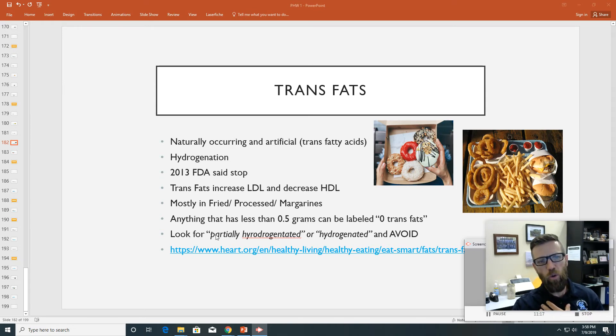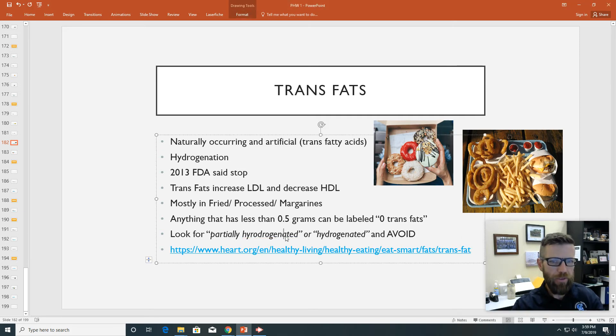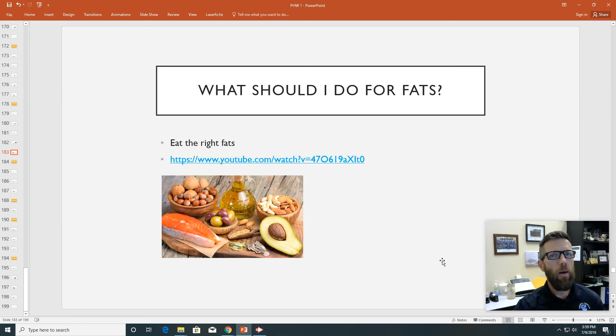But you also want to look for partially hydrogenated. You also want to look for hydrogenated, and you want to avoid it. So when I say that, I'm asking you to consider looking at food labels. And you know what, when you start looking at food labels, you'll start identifying things, things that you can't pronounce. And that's where the buck hits the road, right? So take a look at this article, heart.org, healthy living, talks all about trans fats. It's going to give you some great information about trans fats specifically and heart disease.